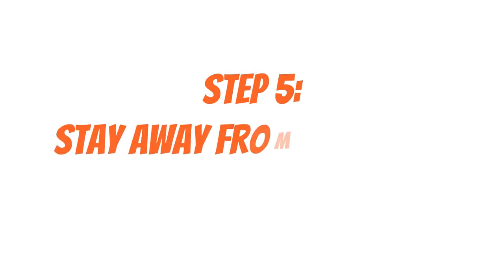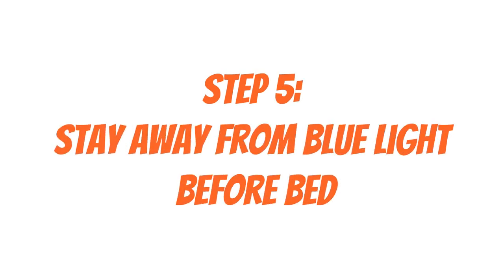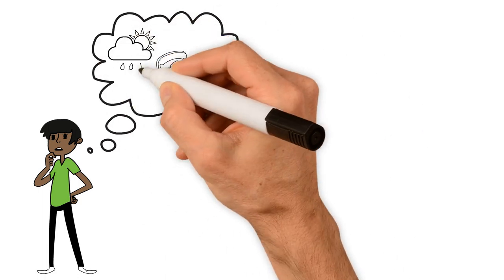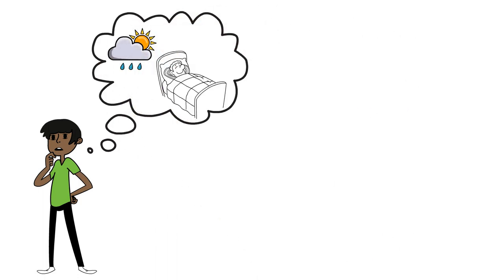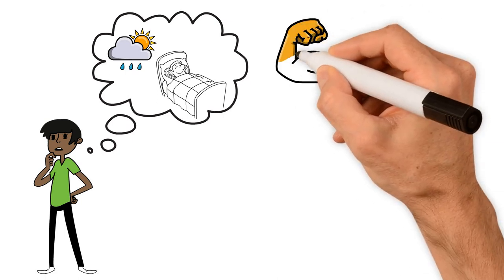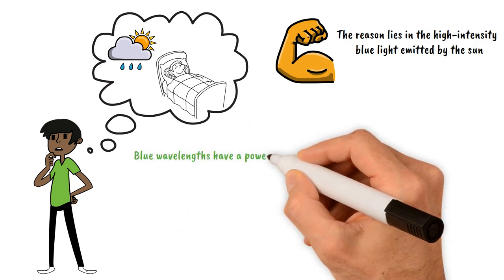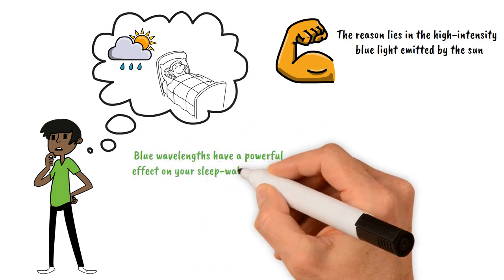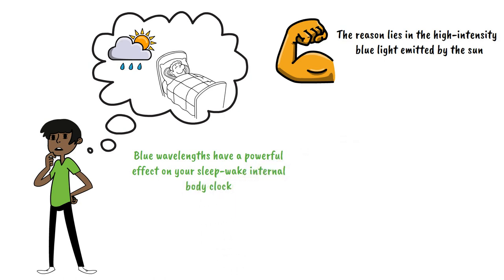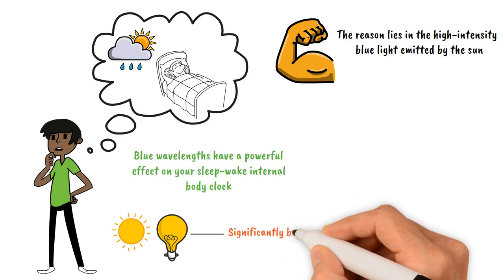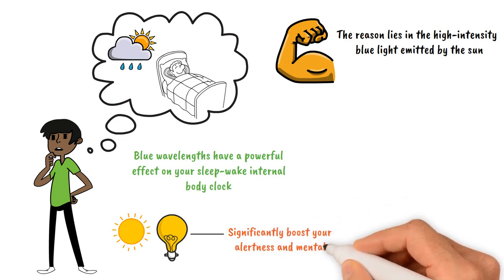Step 5: Stay away from blue light before bed. Have you ever wondered why you often feel like sleeping in on a rainy day, while on a sunny day you wake up with so much energy? Well, the reason lies in the high-intensity blue light emitted by the sun. Blue wavelengths have a powerful effect on your sleep-wake internal body clock. Both natural and artificial sources of blue light can significantly boost your alertness and mental sharpness.